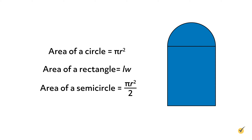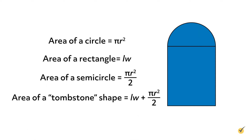Now we can create the formula for the area of our tombstone shape. The area of a tombstone shape is equal to length times width plus pi r squared over 2. It's just the area of the rectangle plus the area of the semicircle. In truth, we don't really need the formula. Logic dictates that we're going to add the pieces of this composite shape to get our total area anyway.